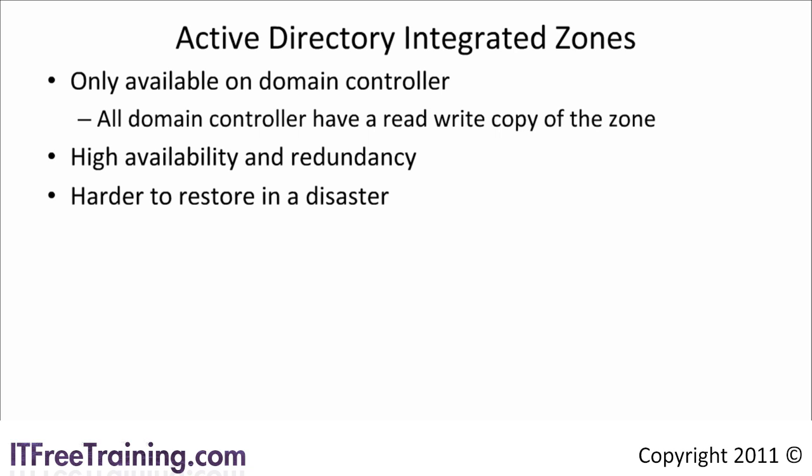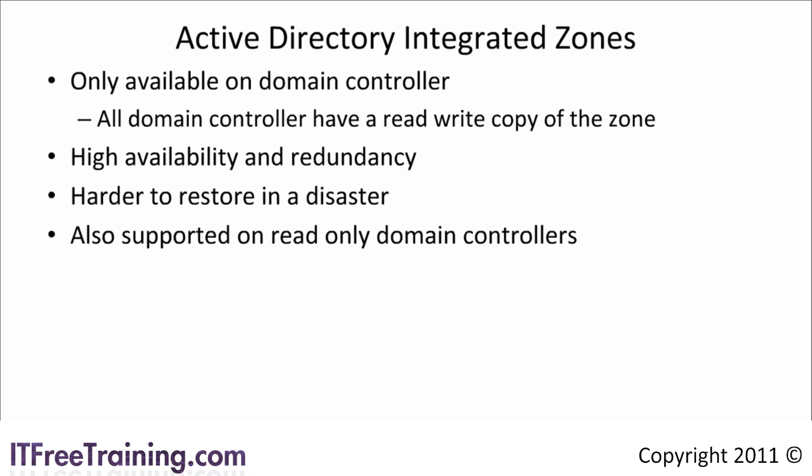Creating a secondary zone from an active directory integrated zone gives you a workaround for not being able to install an active directory integrated zone on a Windows server that is not a domain controller. You can also create a secondary zone from an active directory integrated zone on a non-Windows system such as Unix. The big advantage of active directory integrated zones is that the DNS data is replicated with active directory, giving you a copy of the DNS data on all your domain controllers for redundancy and fault tolerance. Since the data is replicated with active directory, you don't have to create a separate replication schedule for DNS data like you do with primary and secondary zones.